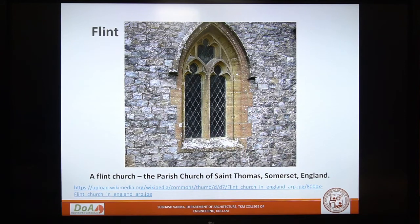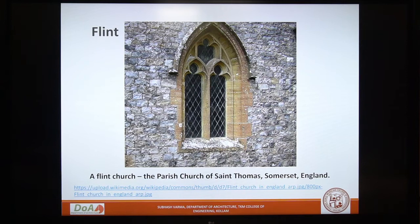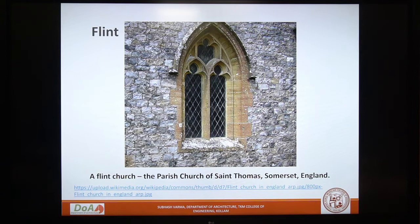Flint masonry is of two types: those which resemble flat-topped teeth having their root penetrated into the wall, or those with exposed ends which are square and smooth surfaced, known as knapped flint work. The joints of round flint work are usually wide compared to knapped flint work. Brick quoins, jambs, and horizontal lacing courses at intervals are the ways adopted for stabilizing flint masonry.